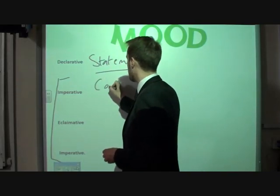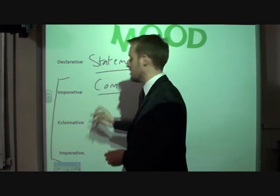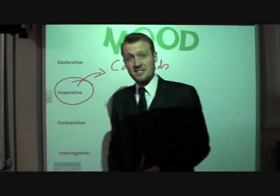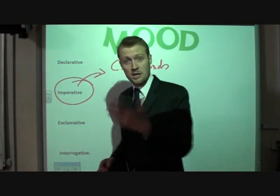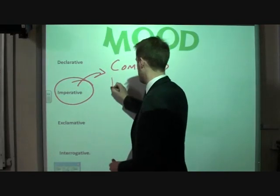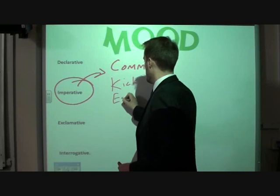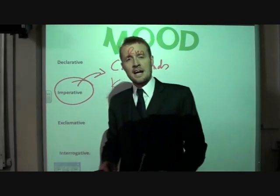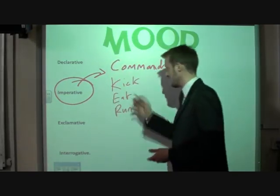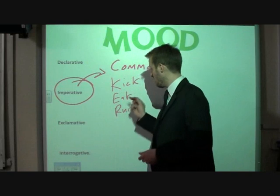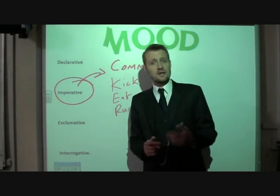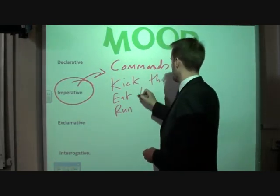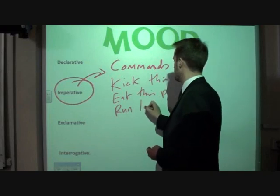Imperative is a command — sentences that tell people what to do. Kick this door down! Go to the shops! Eat this sandwich! Forming imperatives is very easy. All you have to do is take the thing you want to command, like kick, eat, or run — not kicking, eating, or running — and put it at the start of the sentence. Try to come up with a sentence that begins with kick, eat, or run, and you'll always come up with an imperative. Kick this ball. Eat this pie. Run to the shops.